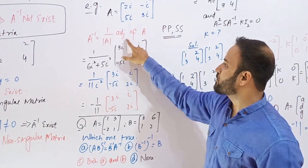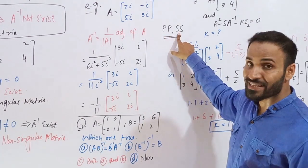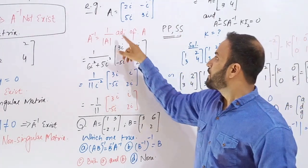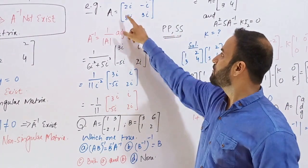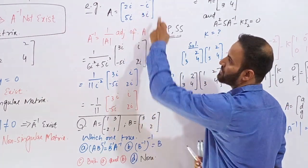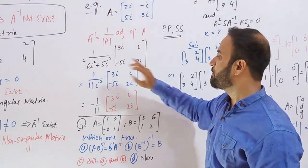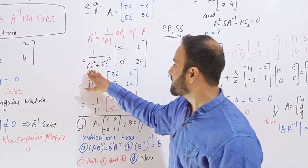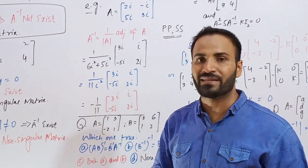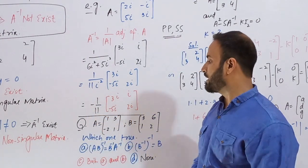PP means position of the principal diagonal; SS means sign of the secondary diagonal. Applying this rule: -i becomes +i, and 5i becomes -5i. The determinant becomes 6i² + 5i² = 11i². Since i² = -1, this equals -11, so the scalar factor is 1/(-11) = -1/11.